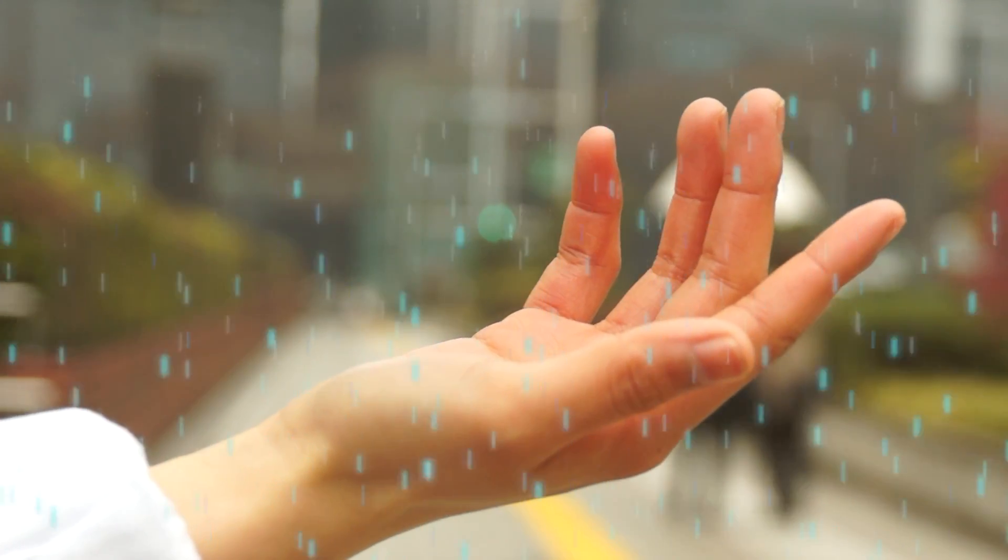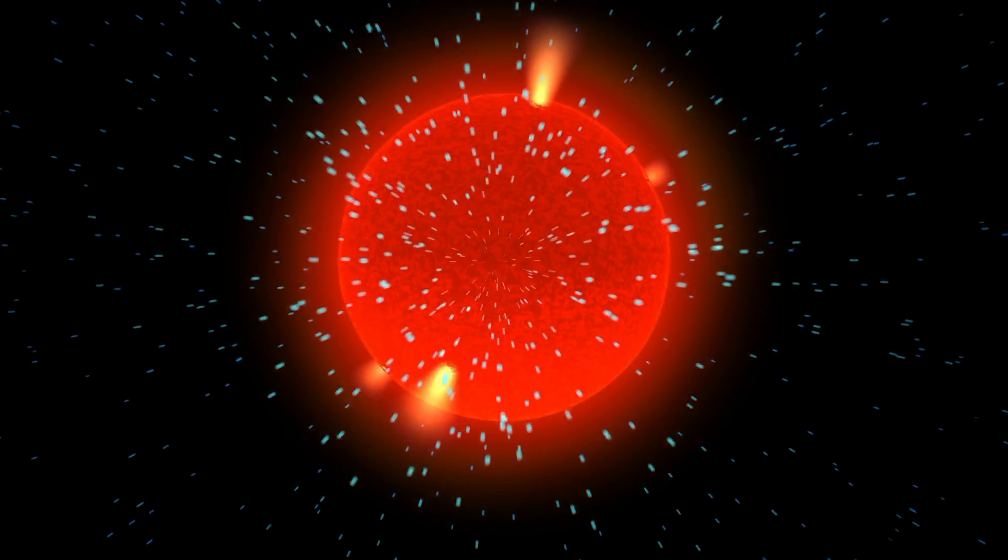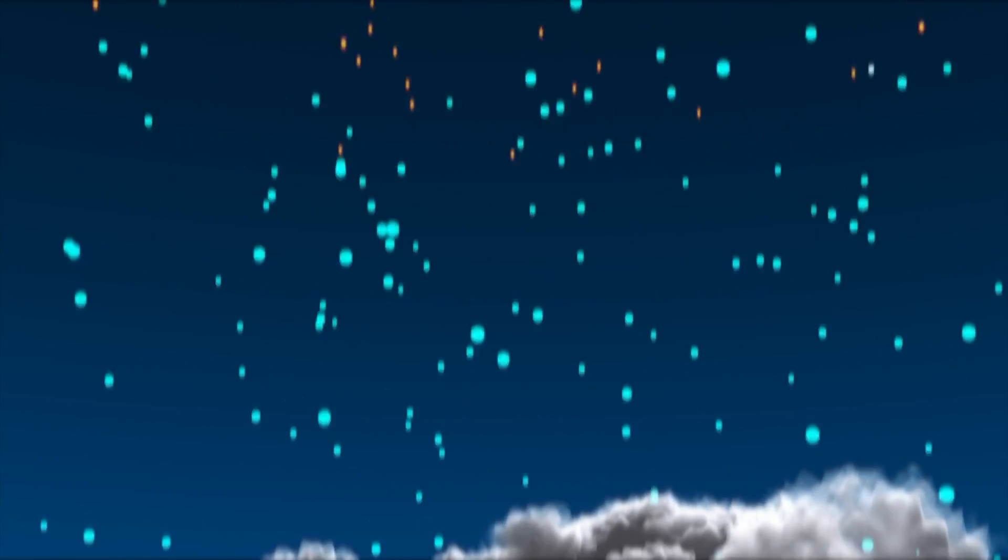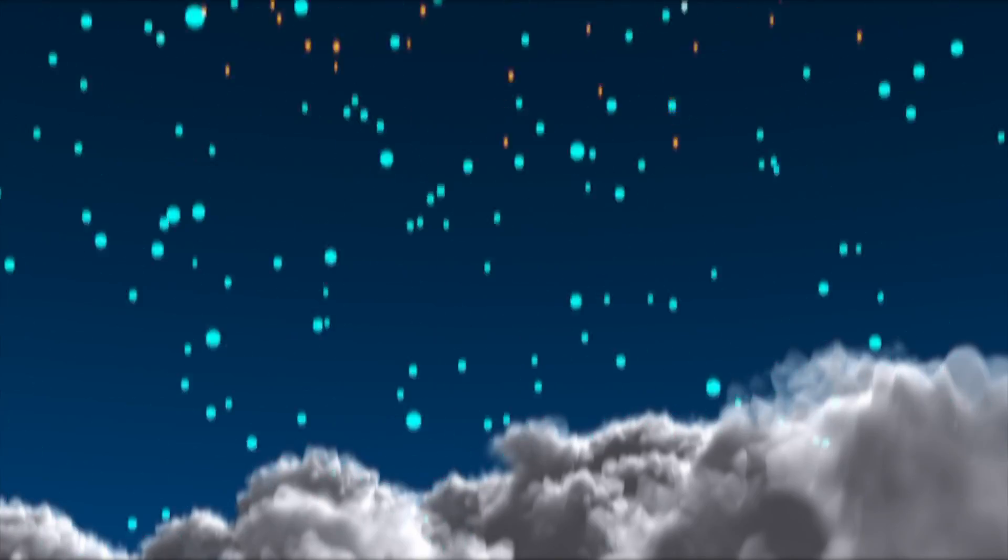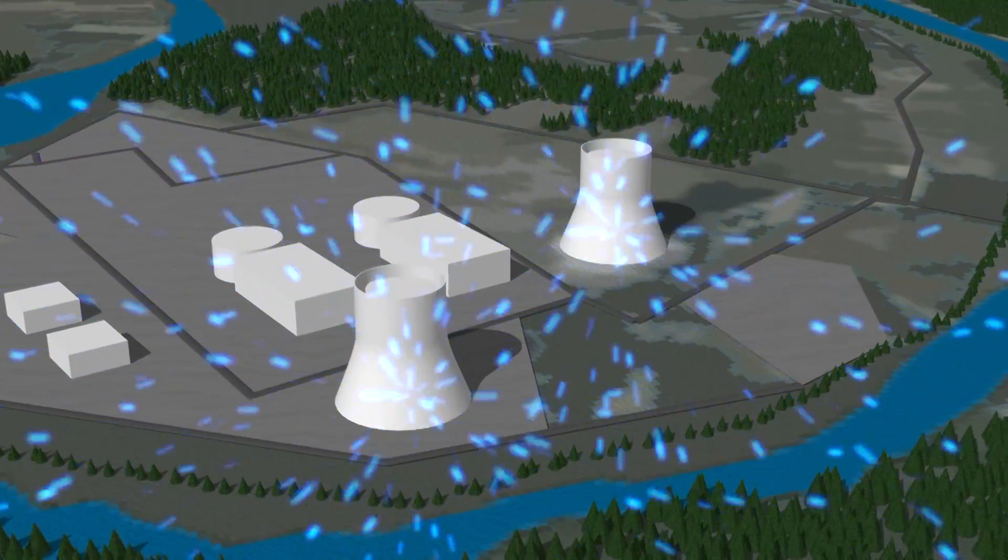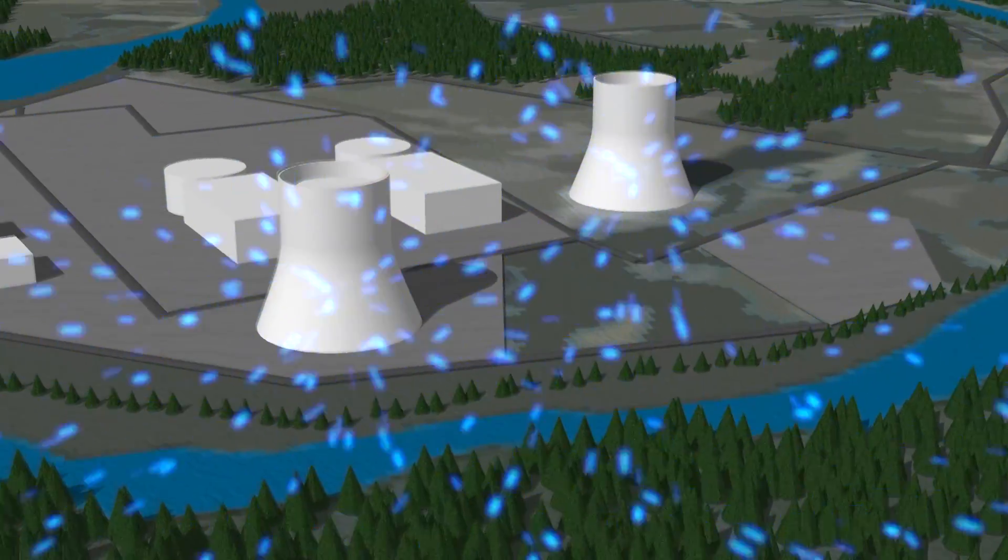There are many different sources of neutrinos. Neutrinos come from stars, including the sun, from cosmic ray interactions in the atmosphere, and from nuclear reactors, to name a few. Scientists have been studying neutrinos using all of these sources.